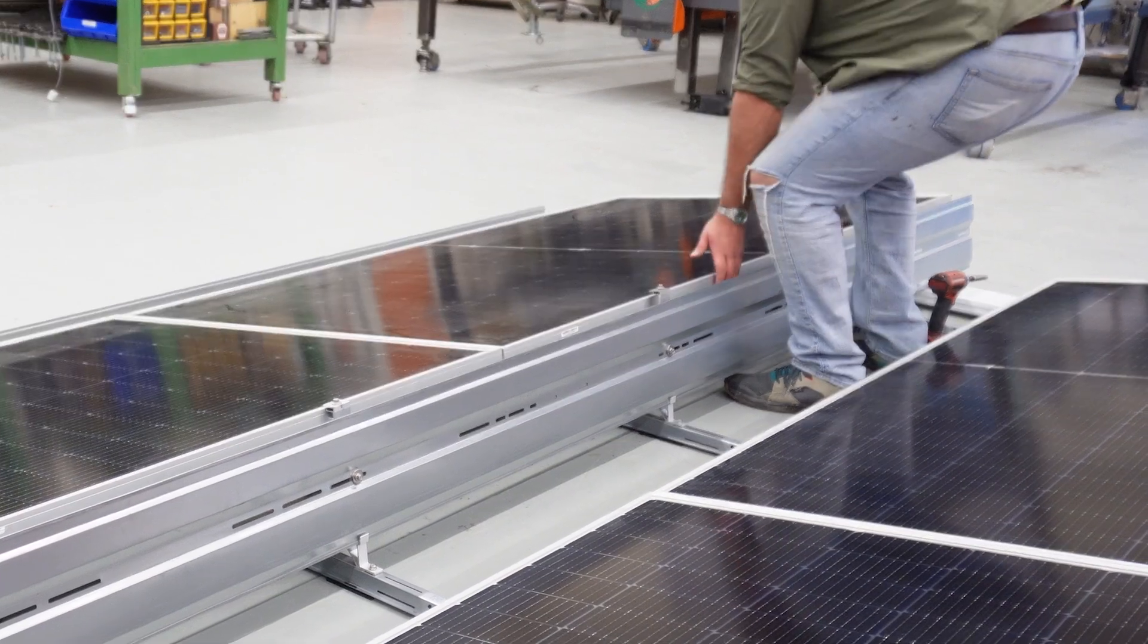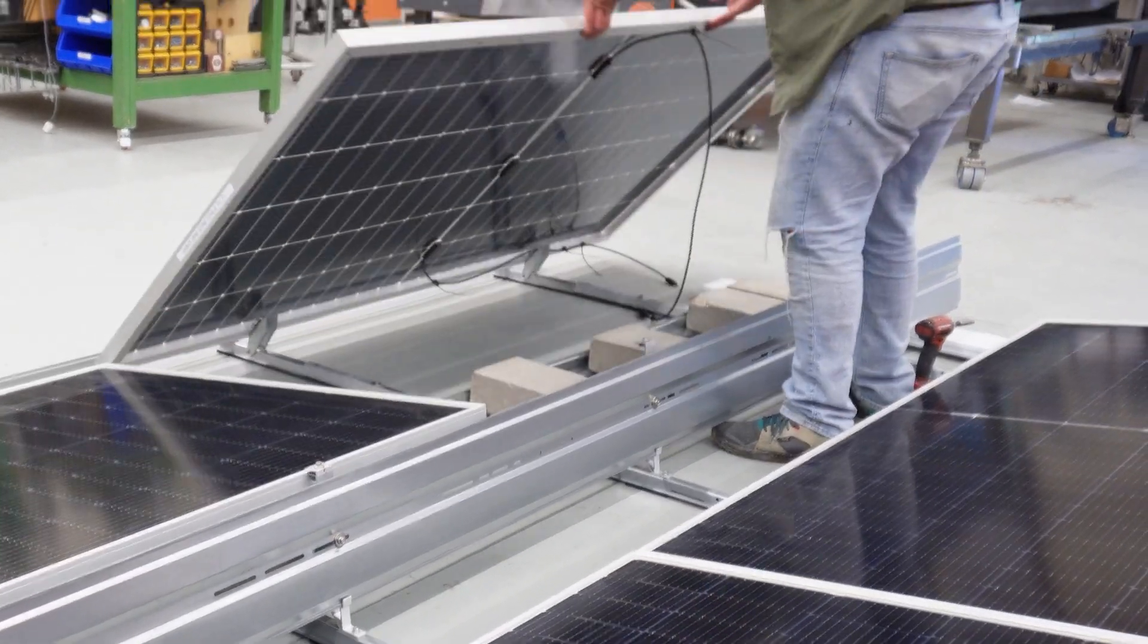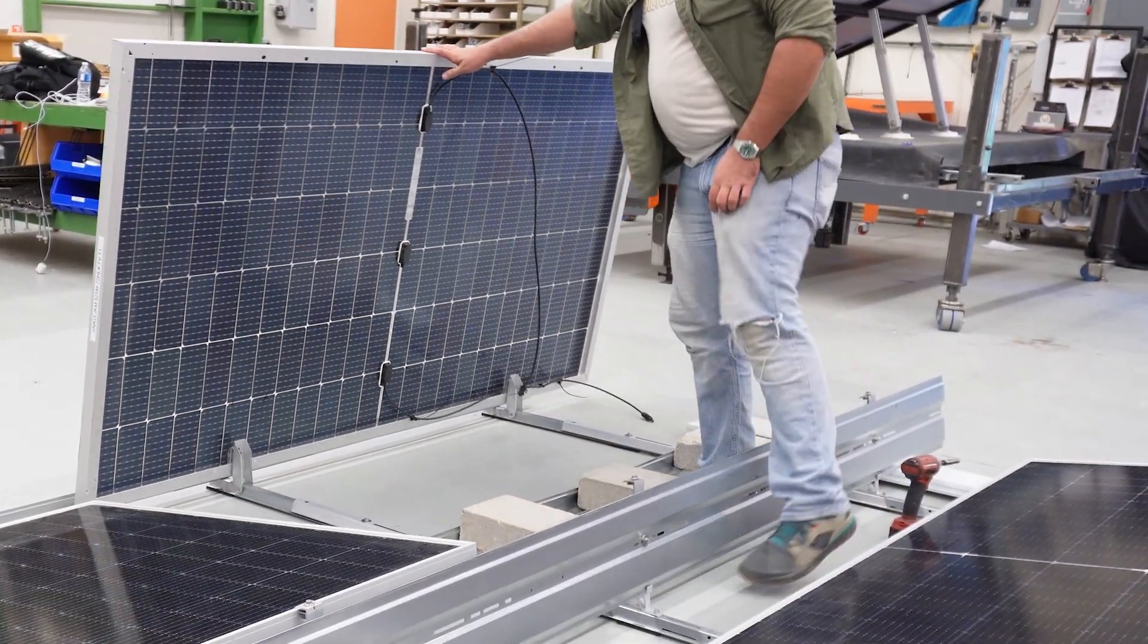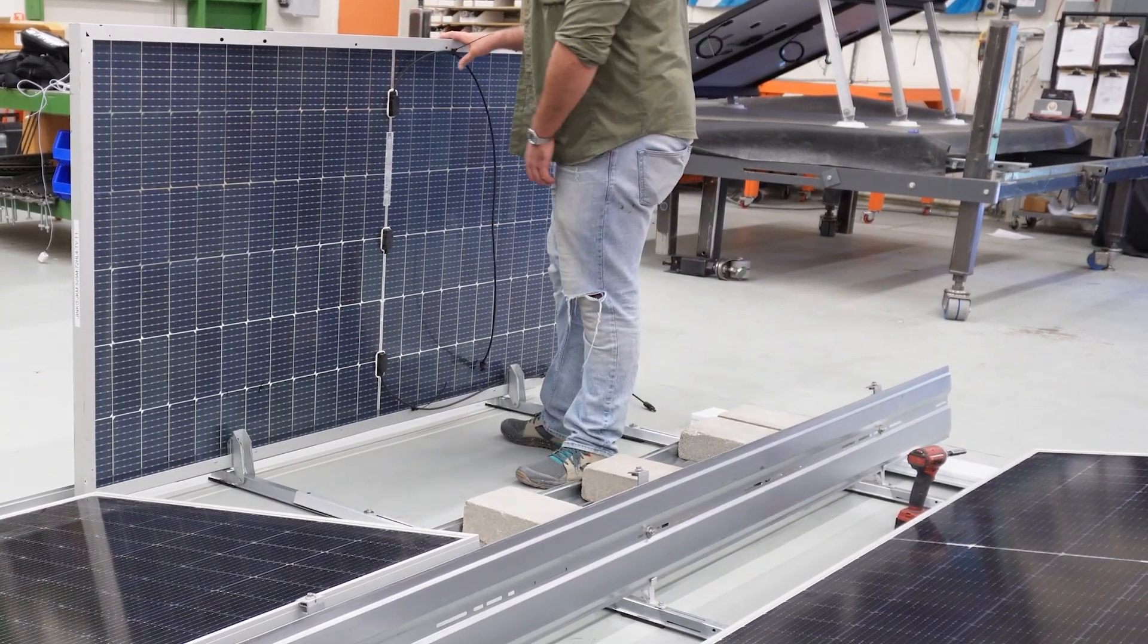With the north edge free, the module can be swung upward into a vertical position without any need to remove other parts, such as the wind deflectors.